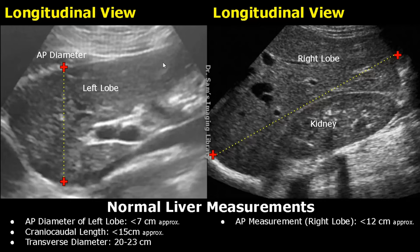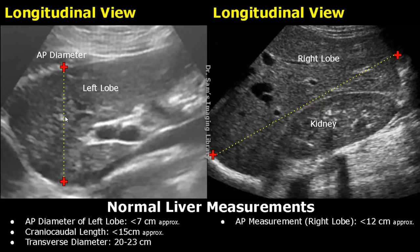This is the left lobe of the liver in longitudinal view. For the left lobe, the AP diameter is approximately less than 7 cm. To measure the AP diameter, place one caliper at the anterior margin of the left lobe and the other caliper at its posterior margin.